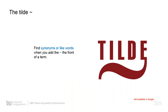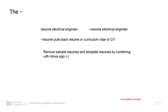The tilde looks for synonyms in front of the term — again, not in Google. For example, searching for resume AND electrical AND engineer with a tilde in front of resume means we're looking for similarities: resume, curriculum vitae, or CV will replace that word. You can create different samples using this approach.